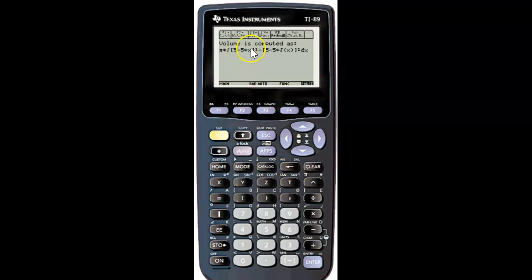Enter, and then we see the setup of the washer method: larger radius squared minus smaller radius squared. This time correctly done, we get 25 pi over 6, which is 13.089 as decimals. That is how the washer method works. Thanks for watching.